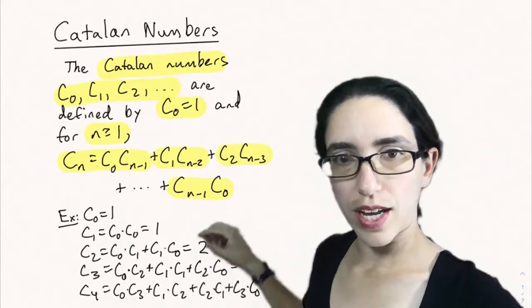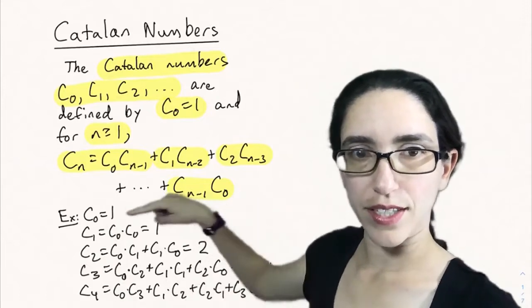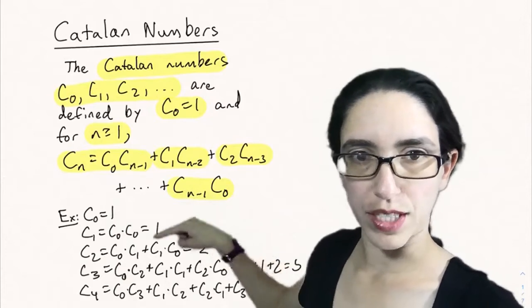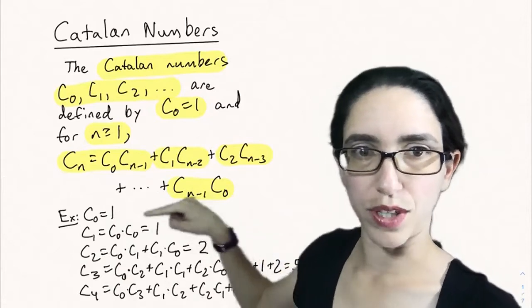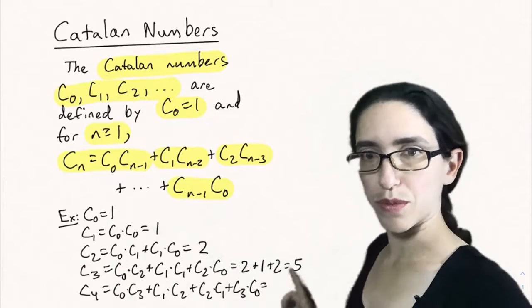Now we can see it visually from here on out. C3 is C0 times C2 plus C1 times C1 plus C2 times C0, which is 2 plus 1 plus 2, which is 5.